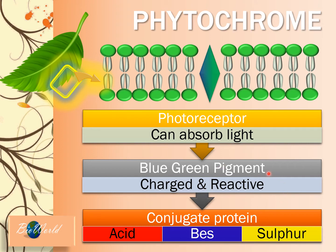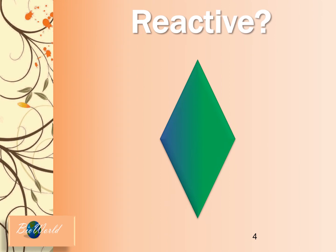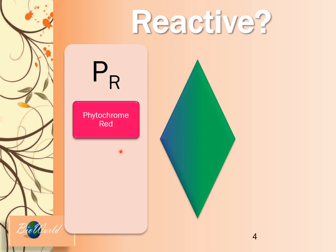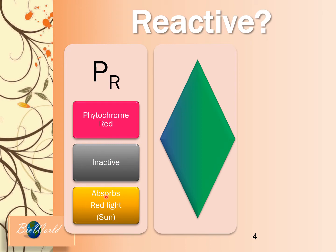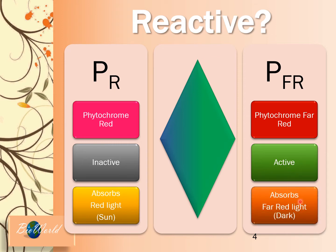Let me elaborate further on the nature of the phytochrome — that it is reactive. There are two types of phytochrome. The first type is called phytochrome red. This is the inactive form, meaning that it is unable to do any biochemical process. However, it can absorb red light from the sun. The second type is phytochrome far-red. Phytochrome far-red is the active form. It can do biochemical processes in the plant and it can also absorb far-red light. This light is found when the environment is dark.